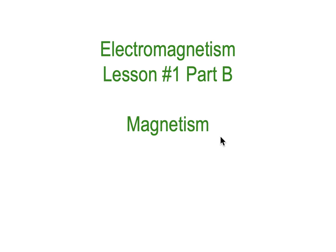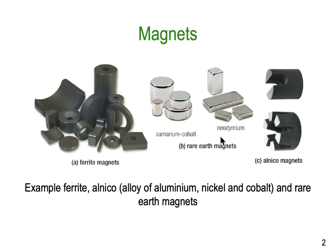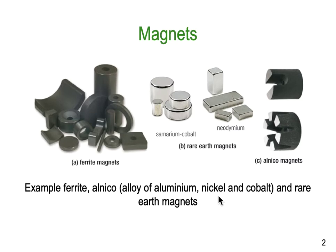Lesson one part B, continuing in magnetism. Magnets generally come in a few types: ferrite magnets have a grey appearance as they're made out of an alloy. There are rare earth magnets made out of metal alloys with a shiny metal appearance, and specially formed magnets made out of special alnico material — an aluminium nickel cobalt alloy. Rare earth and ferrite magnets are the most common types you'll come across.